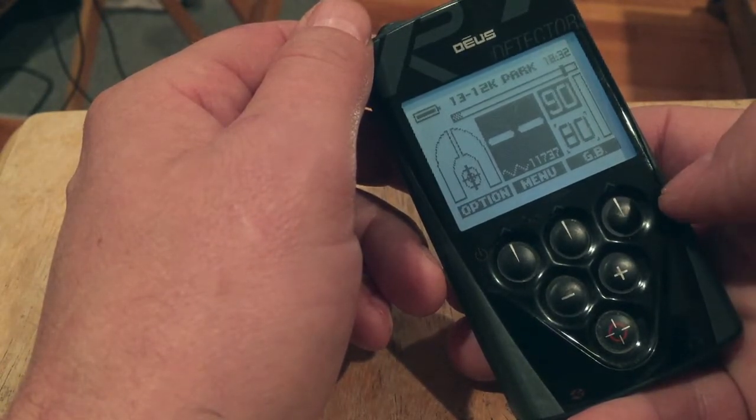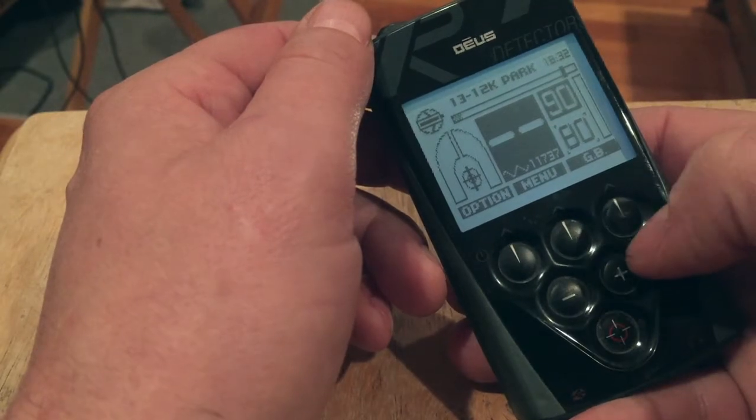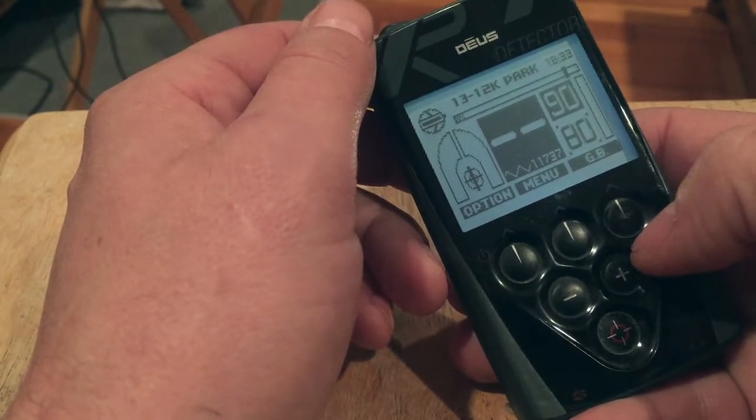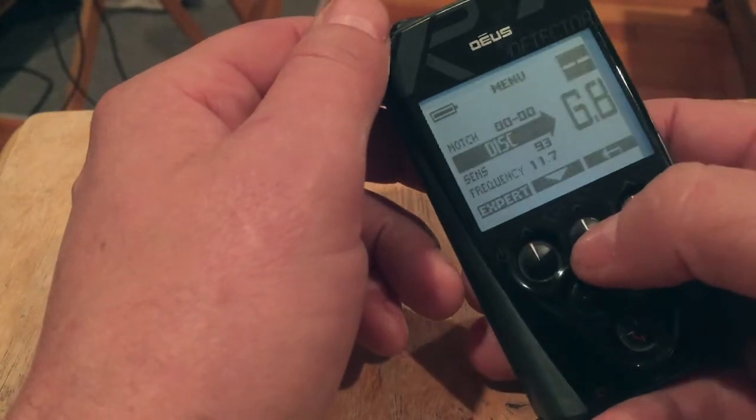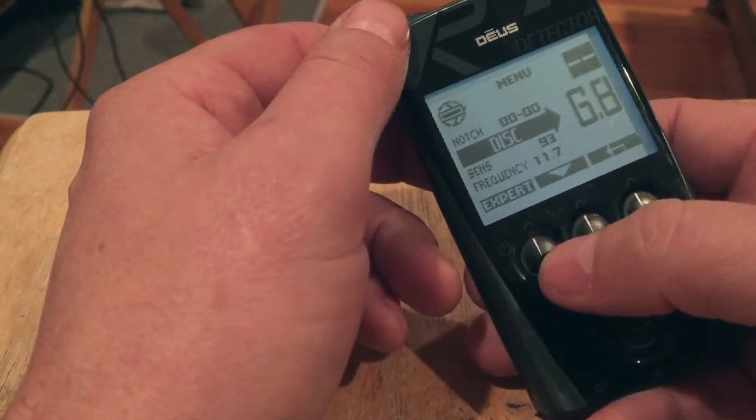I've adjusted the DEUS a little bit for the deeper coins so that I can tell that they may not be coins and that they're trash.